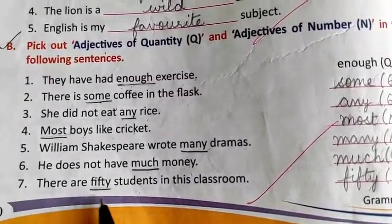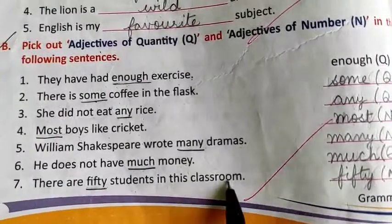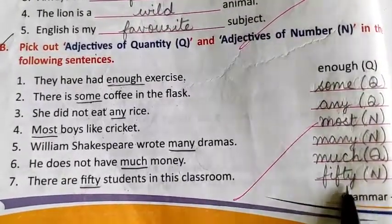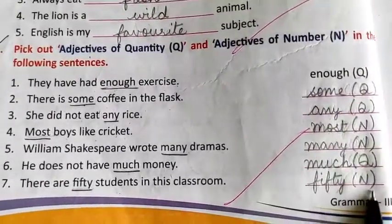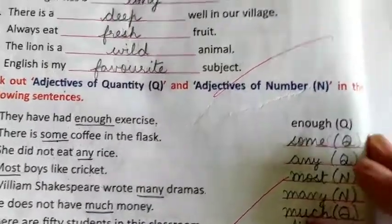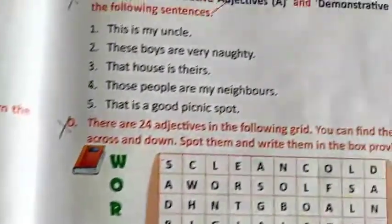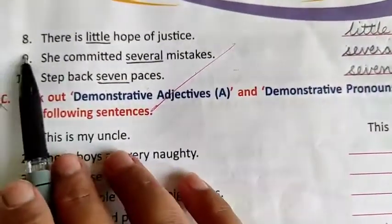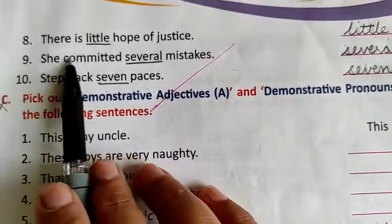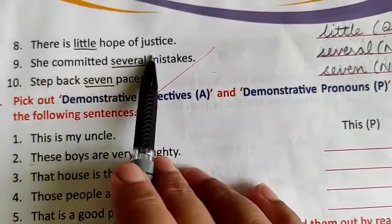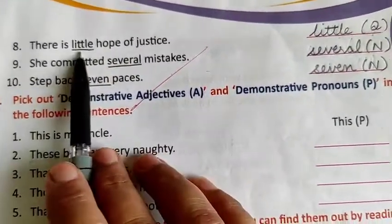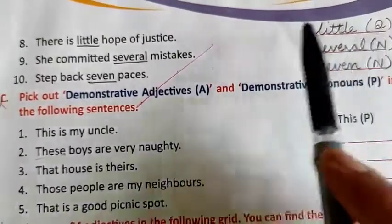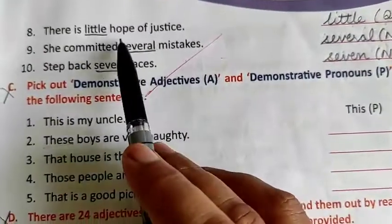Number 7: There are 50 students in the classroom. '50' is the adjective and it is the adjective of number, as we can count the number of students. Number 8: There is little hope of justice. 'Little' is the adjective and it is the adjective of quantity, as we cannot count hope.